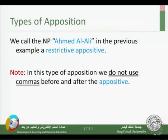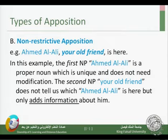You will note that in restrictive opposition we do not use commas before and after the appositive. If you look at the sentence 'your friend Ahmed Ali is here,' there are no commas before or after Ahmed Ali. In the next type of opposition we do use commas, as we will see.